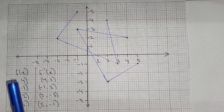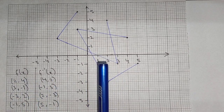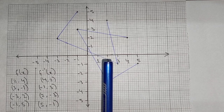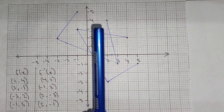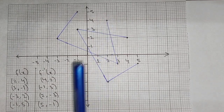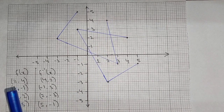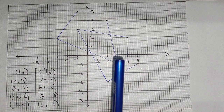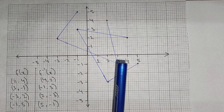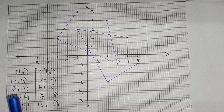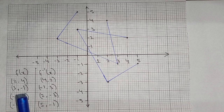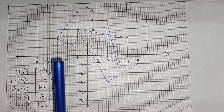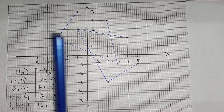Here we have the coordinates 2 and 4 — 2 with respect to the x-axis and 4 with respect to the y-axis. We will place the dot over here. And 3 with respect to the x-axis, minus 1 with respect to the y-axis — so 3 and minus 1, this dot over here. Then minus 3 with respect to the x-axis and 2 with respect to the y-axis, so we place that dot.